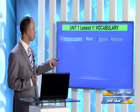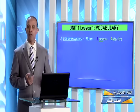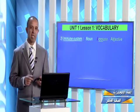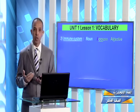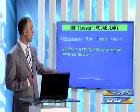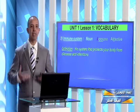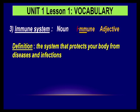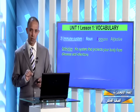The next word is immune system. The immune system is a system in our body which protects us — it's the cells and organs inside our body which protect us from diseases. The word immune is an adjective, divided into two parts. You stress the second part, so you say immune.